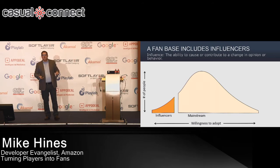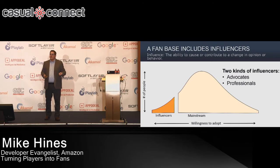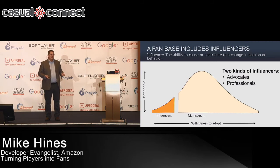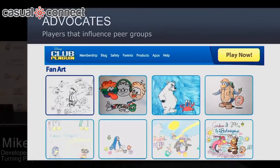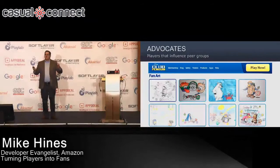Influencers fall into two general categories: advocates and professionals. Advocates are really fun — they're people who are important in their circles, who influence their peer groups. They're the tower defense god, if you will.